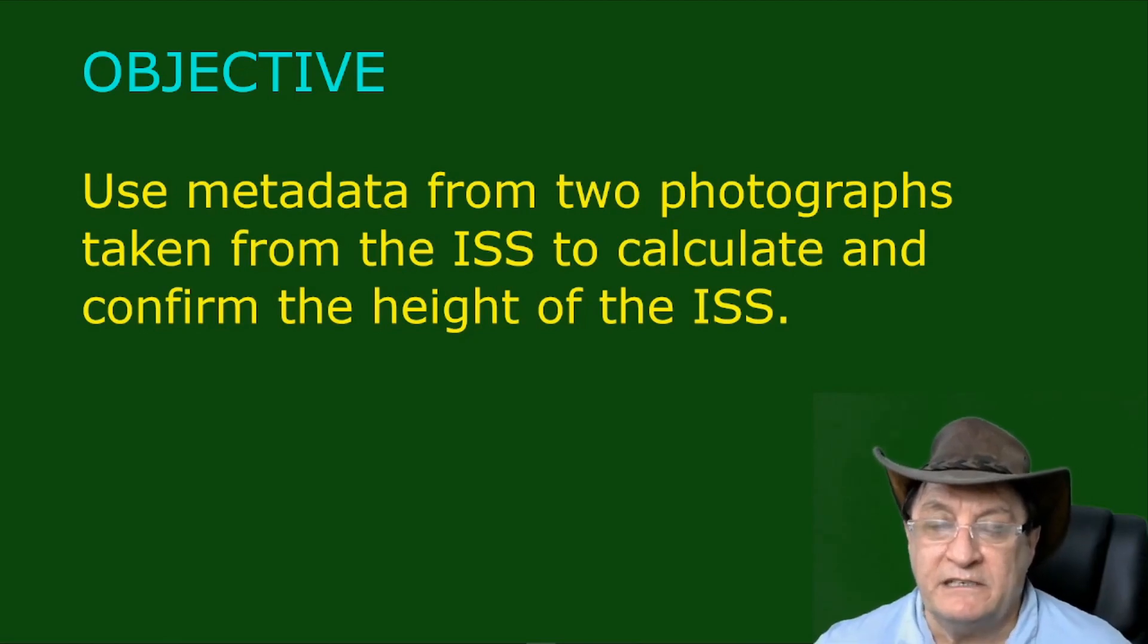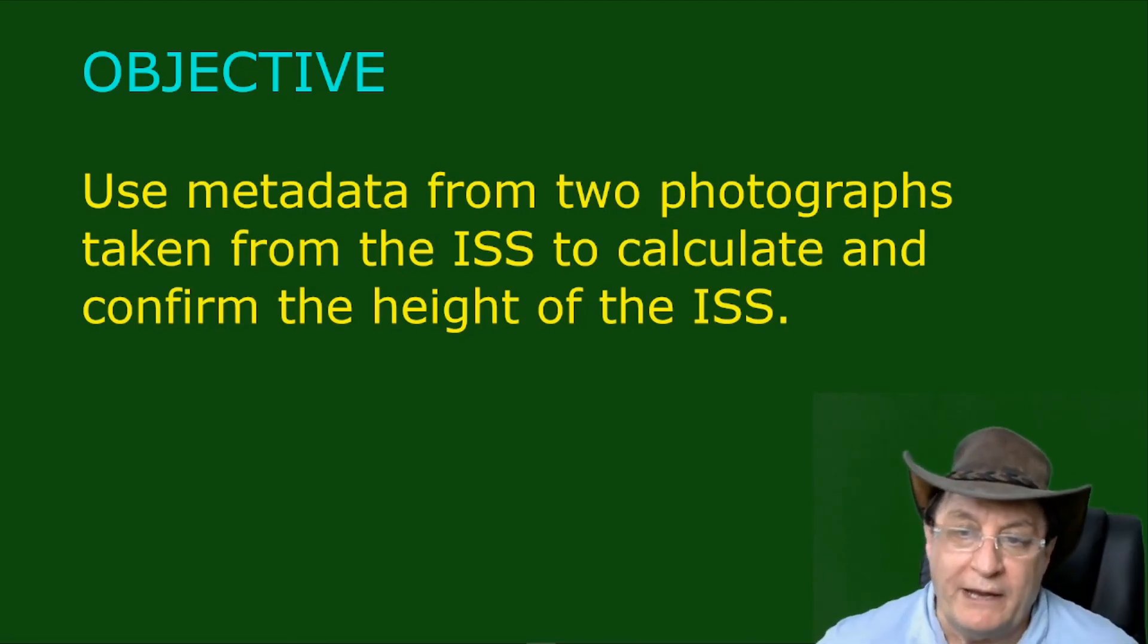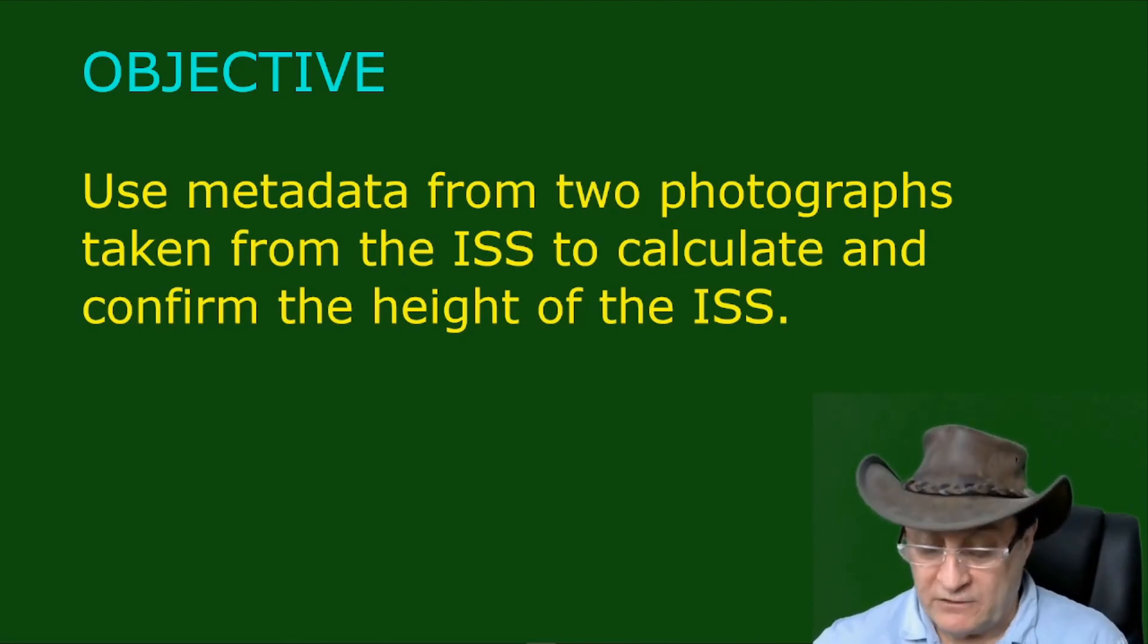Because flat earthers in general cannot comprehend the ISS. They like to say that it's a balloon or an airplane or a drone or something, and by calculating the height we can effectively rule out all of these things, not to mention the fact that the ISS travels very, very fast. And that is observable in the transit videos. Anyway, let's get on with it.